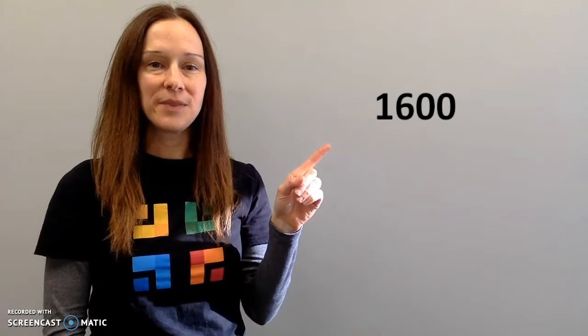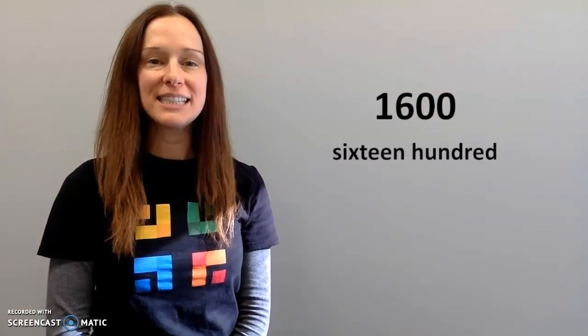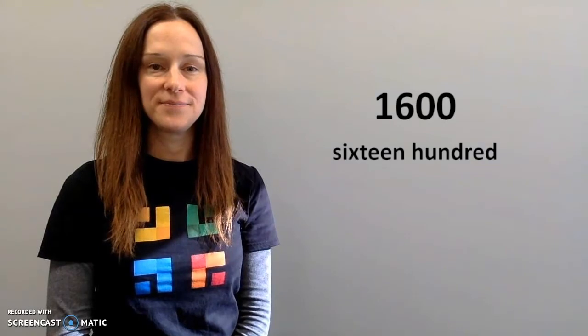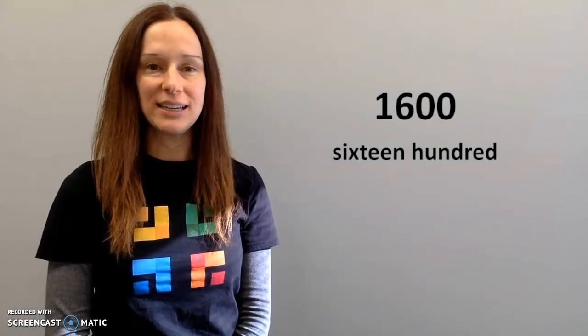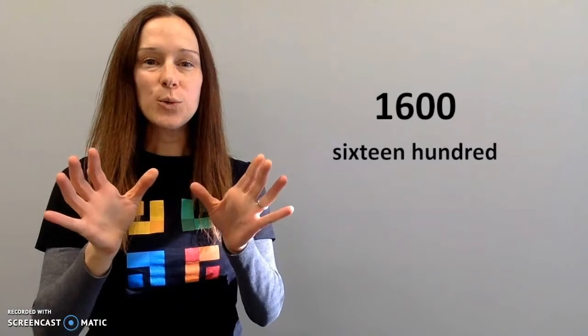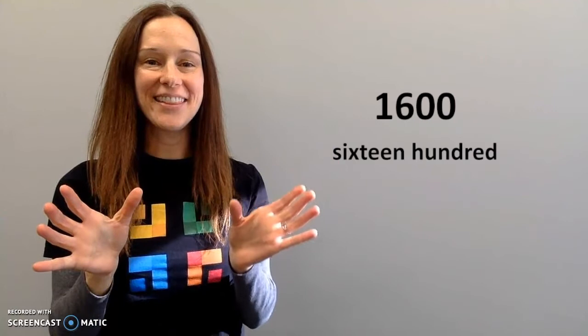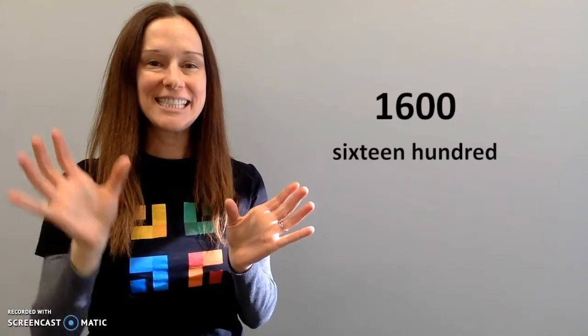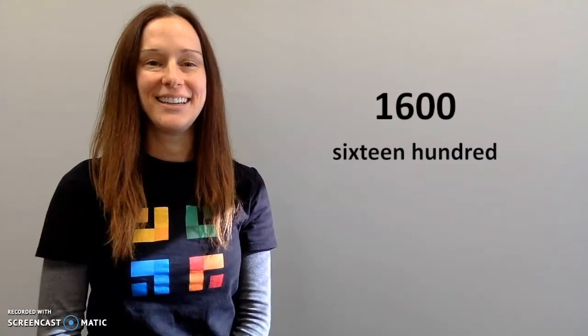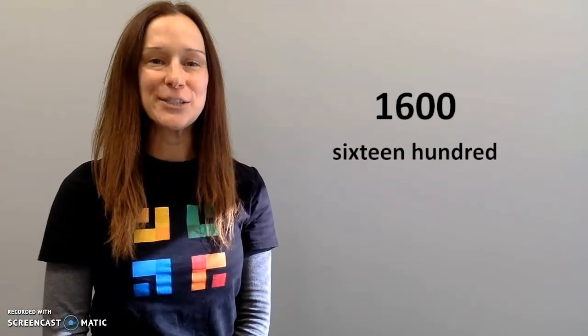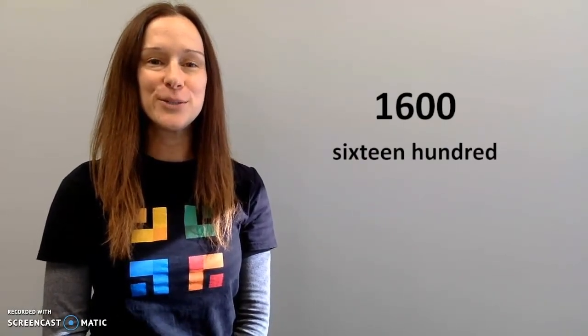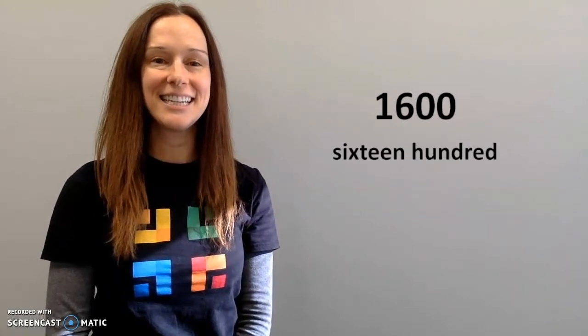So for the years 1999 and before, for a number like this one that's an even hundred, we'd say sixteen hundred. It's like we're splitting the number in half and reading the first half and then the second half. Sixteen hundred. In the year 1600, there were no YouTube videos. Sixteen hundred.